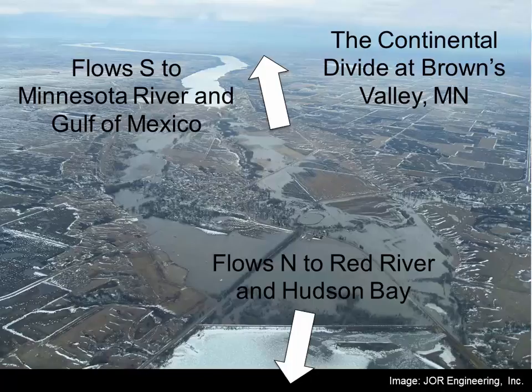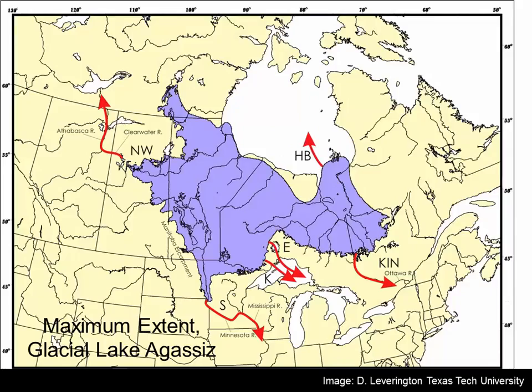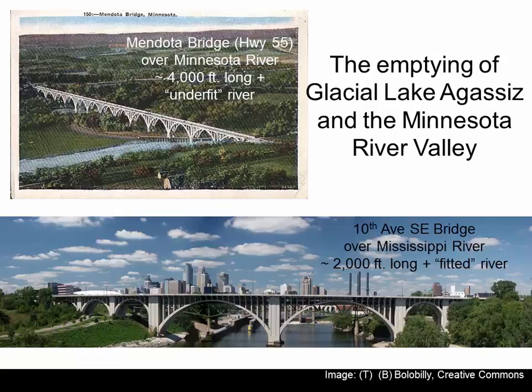The south drainage of Glacial Lake Agassiz was right at Browns Valley, Minnesota. The Red River flows north toward Hudson Bay, and the Minnesota River goes south to the Gulf of Mexico — that is the Continental Divide, a watershed boundary. All the water from Glacial Lake Agassiz piled up here, and there was a catastrophic flood. A natural levee was breached, and a lot of water poured out of Glacial Lake Agassiz down into the Minnesota River Valley in a very short amount of time. The Minnesota River happened to be one of the largest drainages of all the water in this lake.